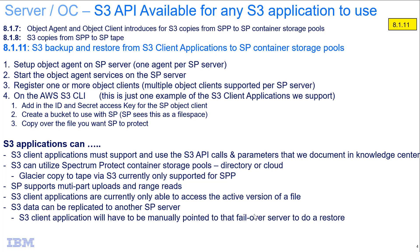I want to be clear that this function allows applications to send data to Spectrum Protect via S3 to be protected. This is different from the S3 support we have for writing data out to Spectrum Protect container storage pools that are in the cloud.